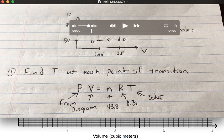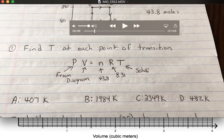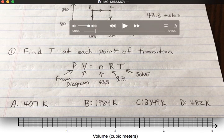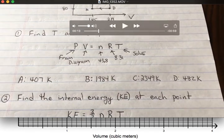Then the first step is to find the temperature at each point A, B, C, and D. To do this, get your pressure and volume from your diagram, your number of moles, your ideal gas constant, and solve for temperature. Once you have your temperatures, here's what I got as my four temperatures.